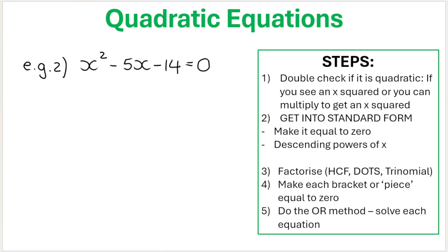Here's my second example. Now, first thing, how do I know that it is quadratic? Because I see an x squared. So I know that it is quadratic. It's not linear. It's quadratic. It's going to give me two solutions, two answers. So x equals something or x equals something. So our steps get into standard form. Make it equal to 0. Ah, great. It's already equal to 0. Fantastic. And descending powers of x. So x squared, then x to the power of 1, and then the term with no x. So it's already in standard form for me. Fantastic.